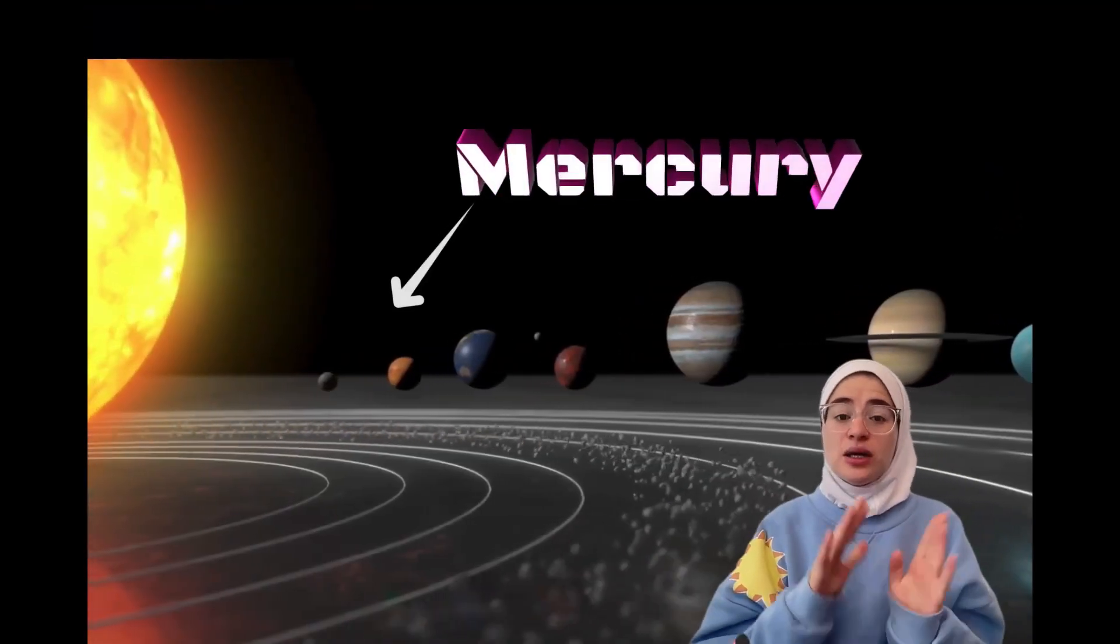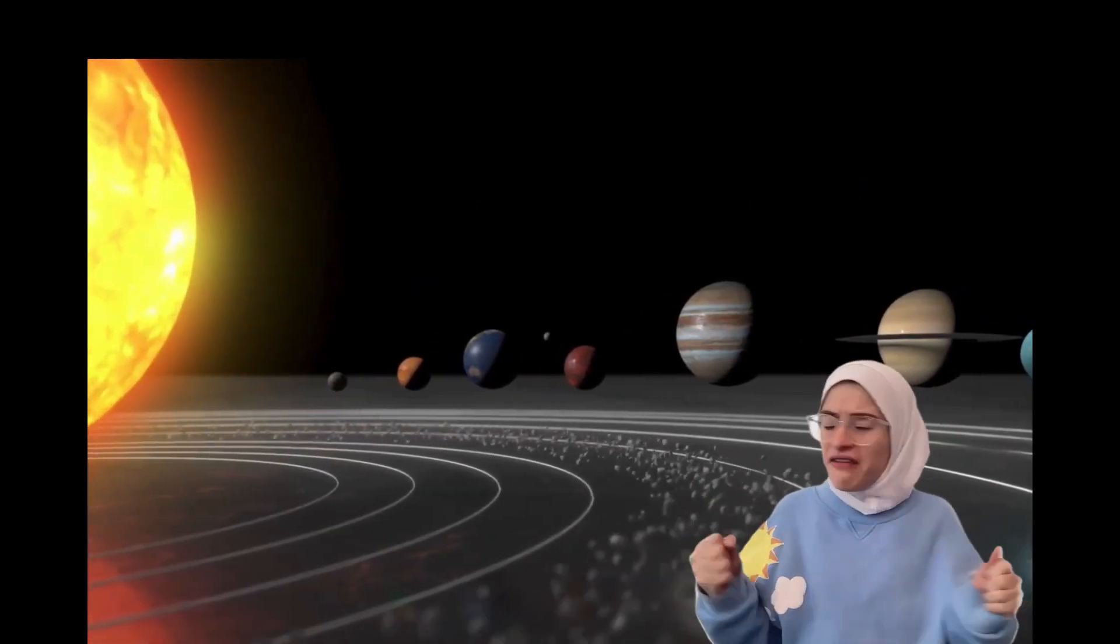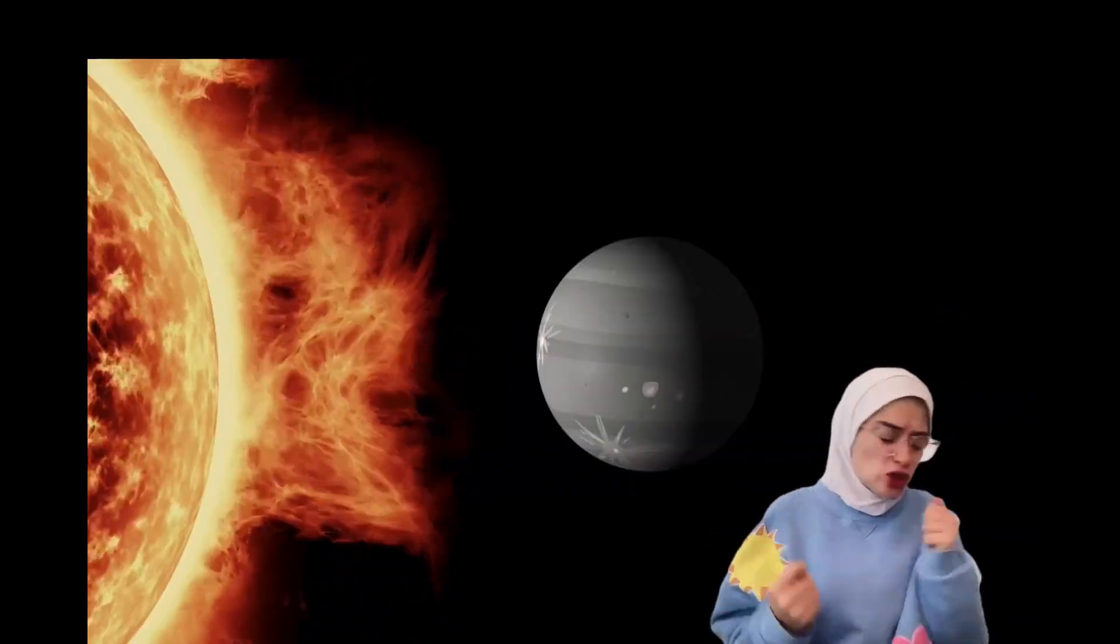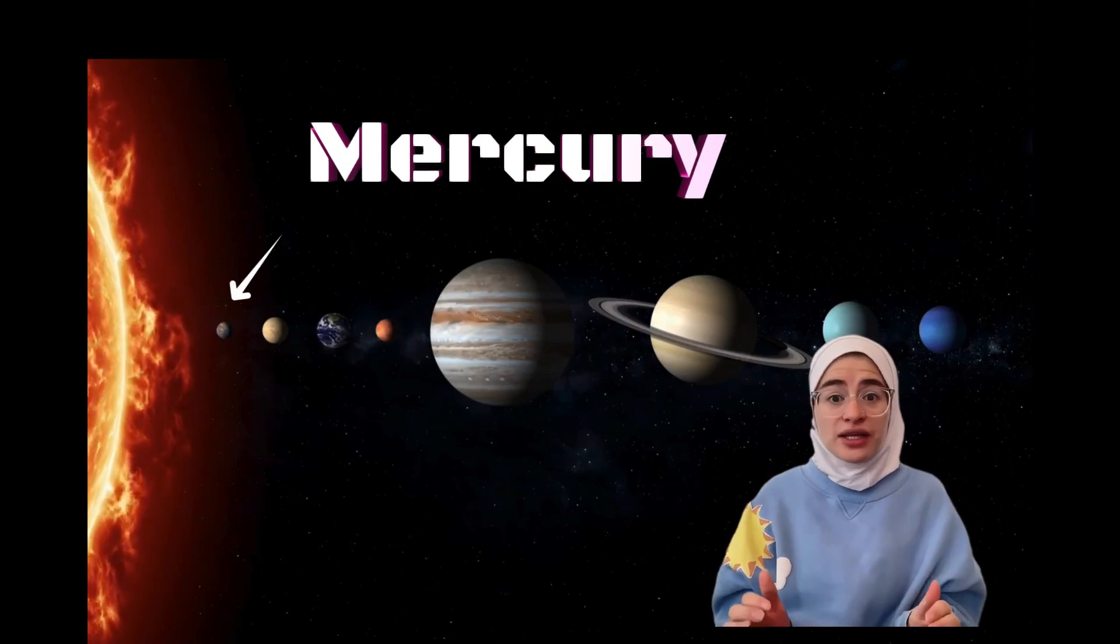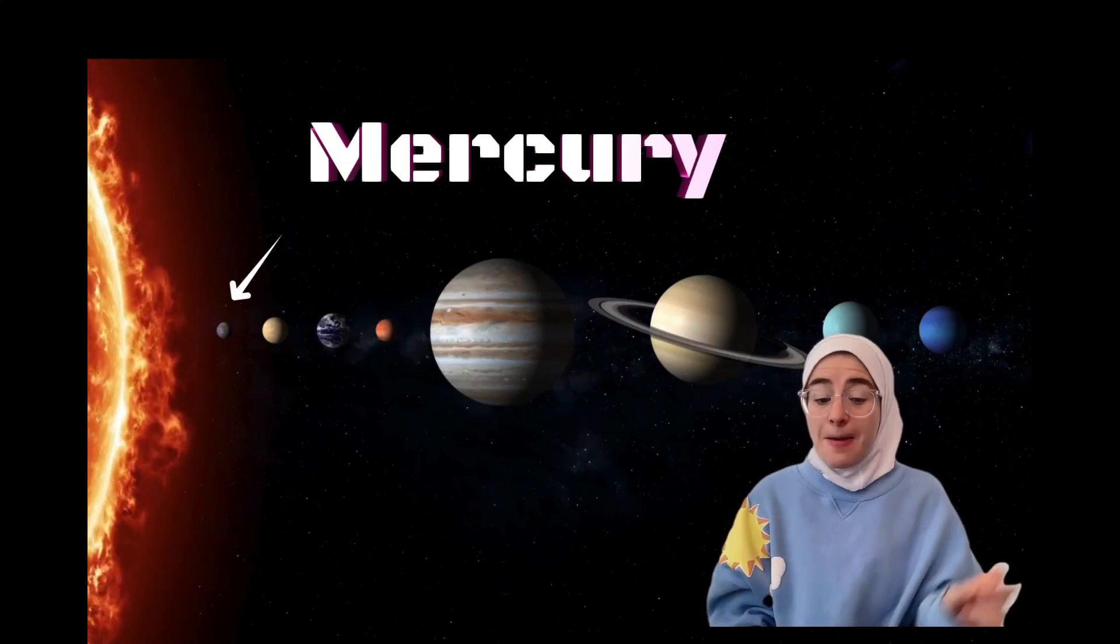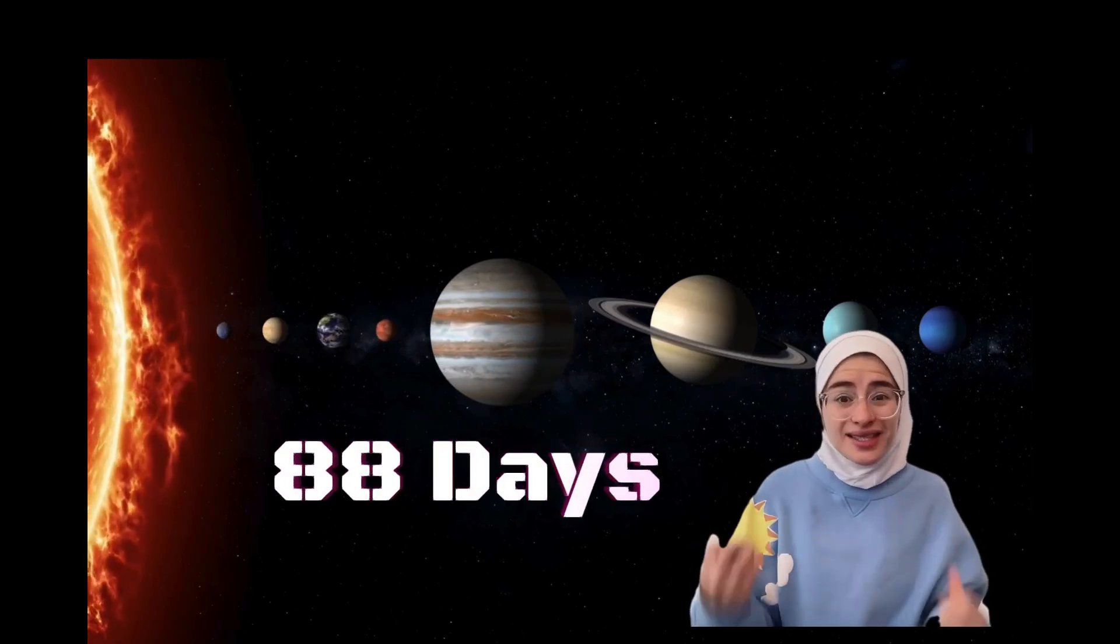Mercury is the closest planet to the sun. It's like the speedster of our solar system, racing around the sun super fast, faster than any other planet. Despite being small, it's a temperature roller coaster, meaning it's super hot during the day and freezing at night. A year on Earth is 365 days, but imagine a year on Mercury is only about 88 days.